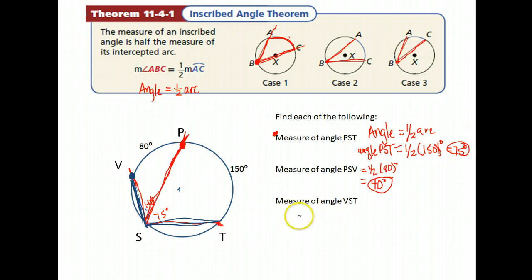So angle VST should be equal to angle PSV plus angle PST. That is 40 degrees plus 75 degrees. We do that, we get 115. So notice on that last one, we didn't look like we used our property, but had we started the problem at the very beginning and only been asked to find the measure of VST, we would have had to use the property to find each of our angles and add them together.